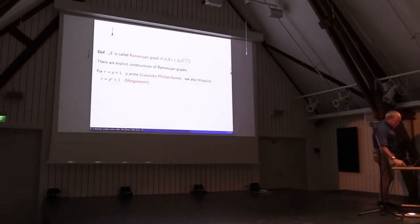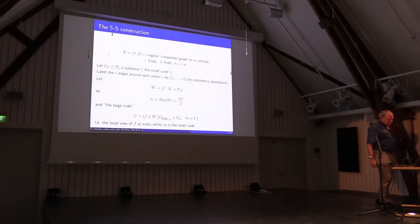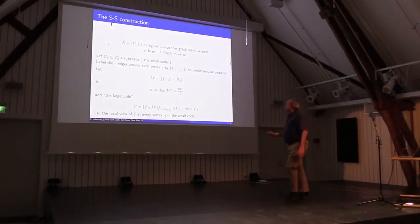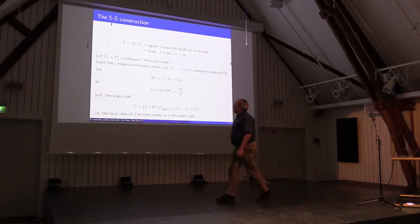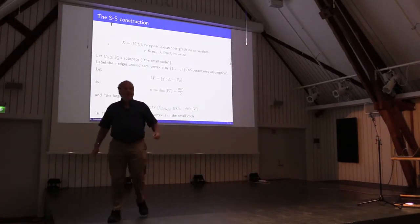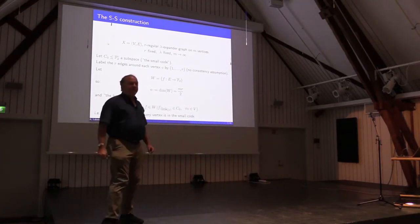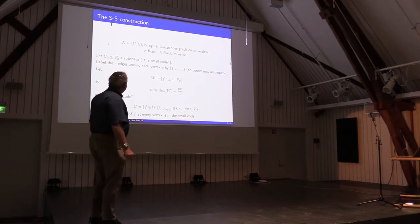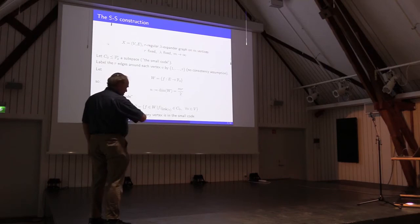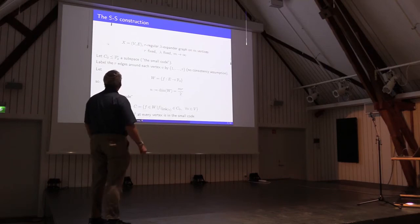We don't really need the full Ramanujan, but we have a source of graphs where the second largest eigenvalue is much smaller. After this brief introduction, let me now give you the complete Sipser-Spielmann construction.